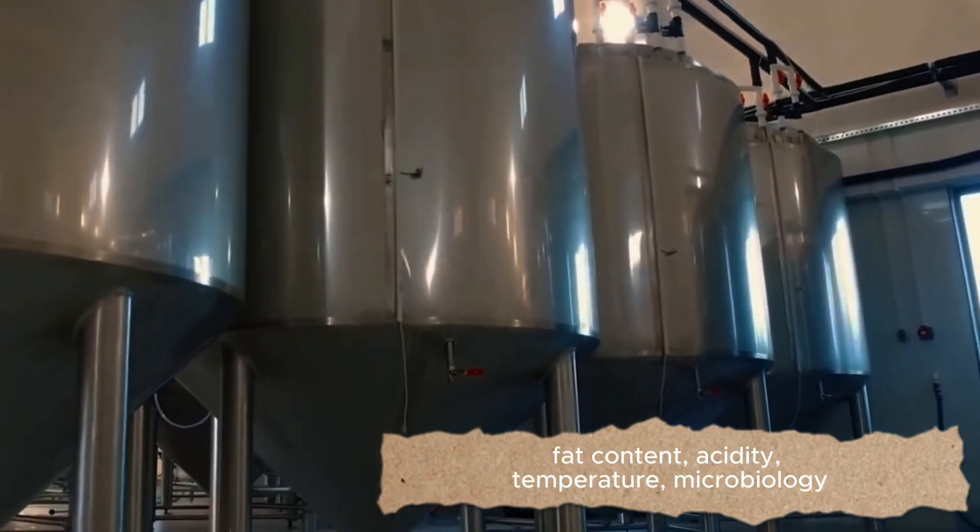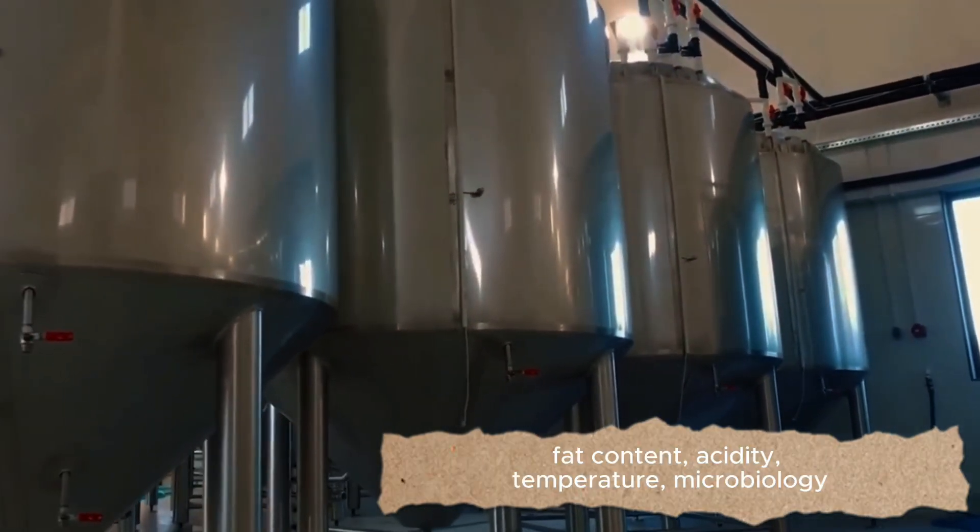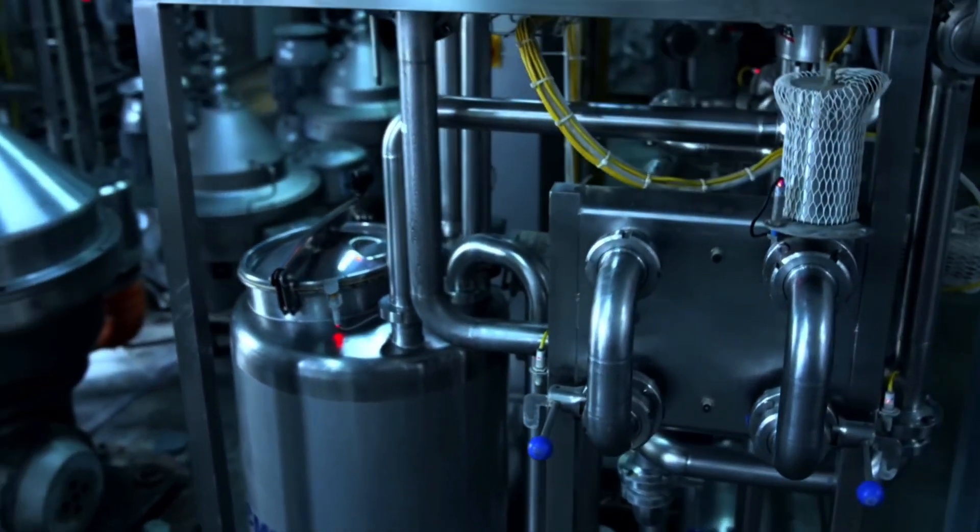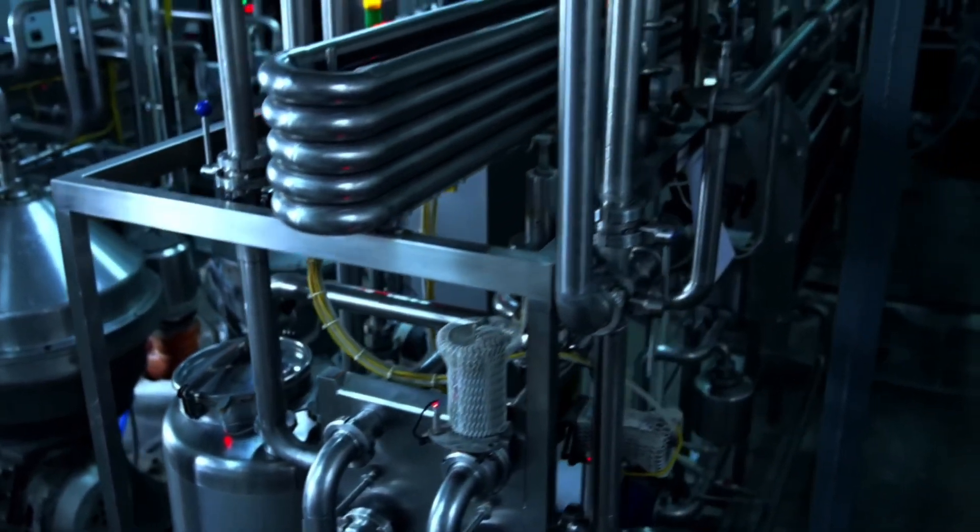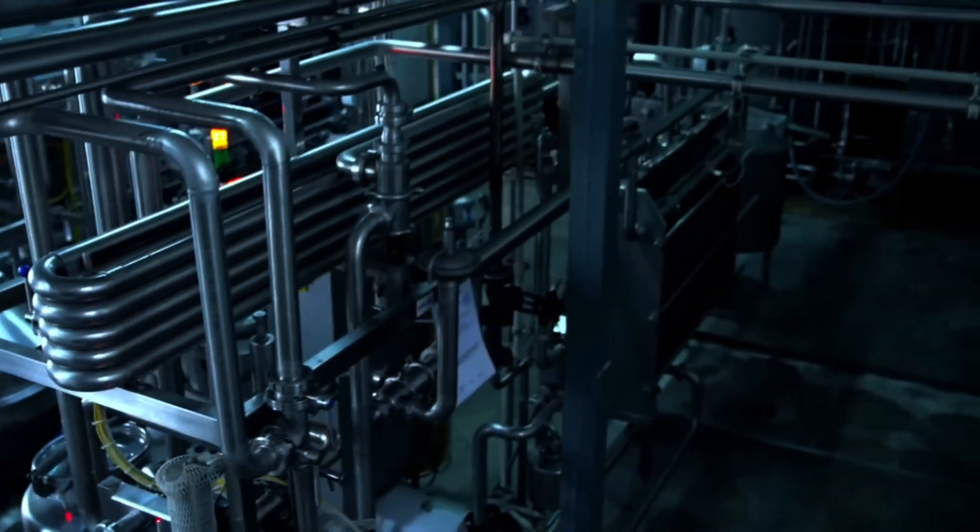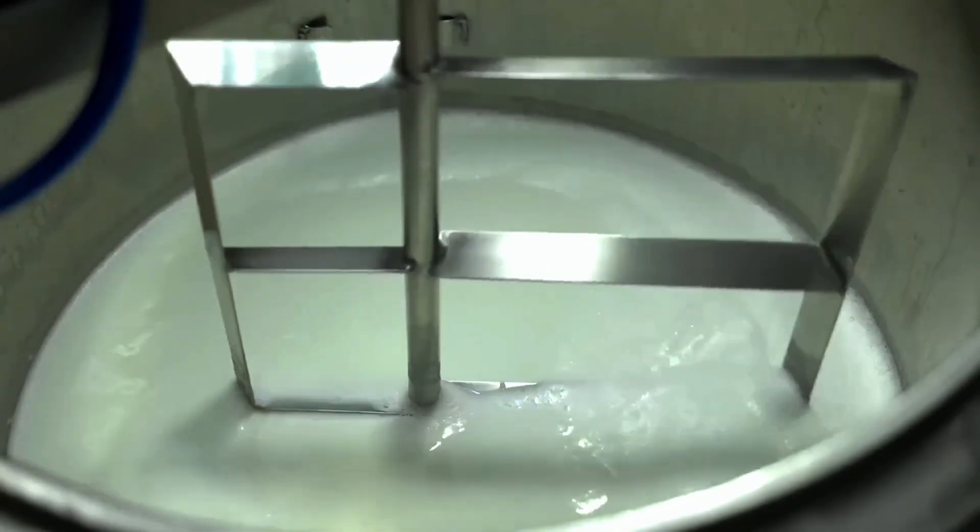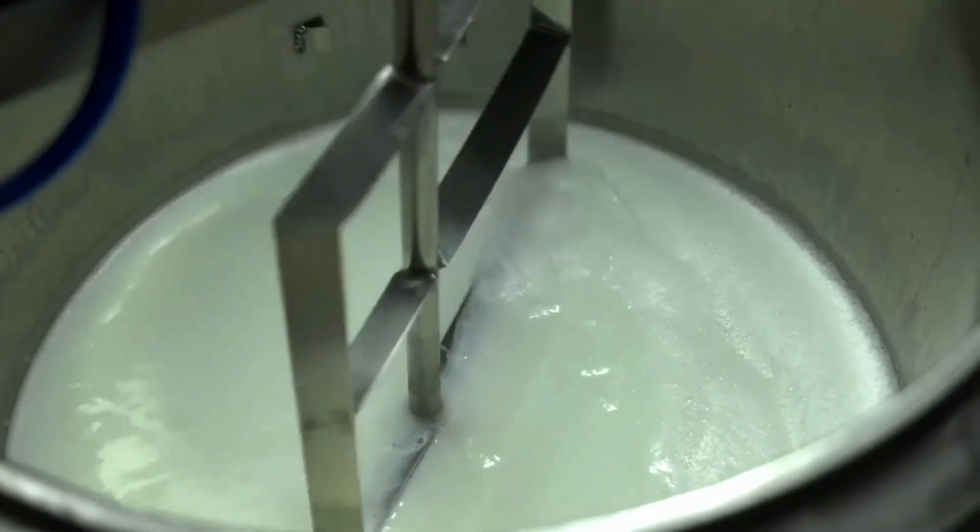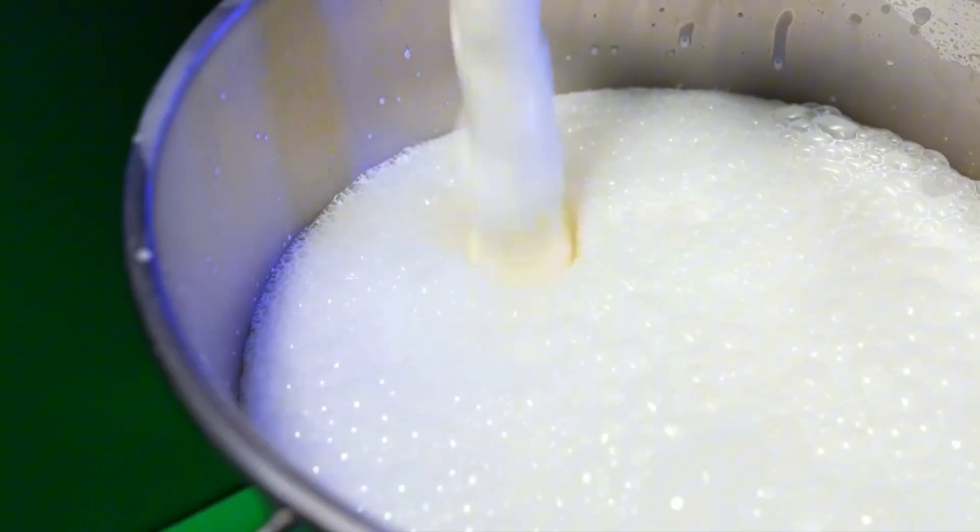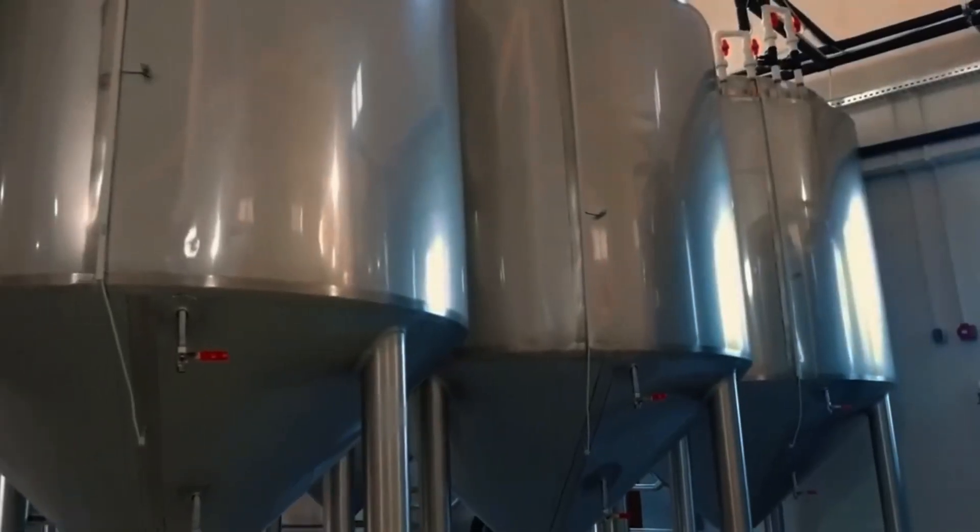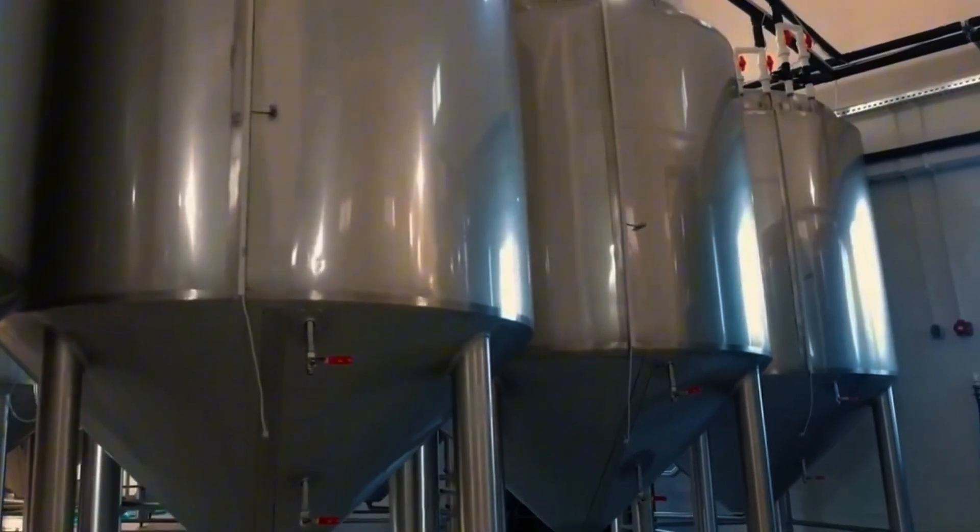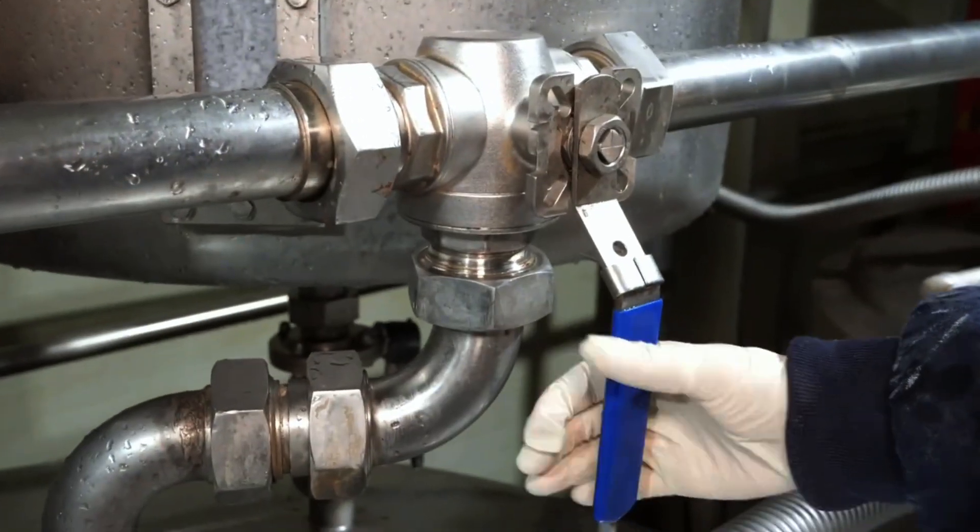Fat content, acidity, temperature, microbiology. If anything is off, the entire batch is rejected. Quality always comes first. The milk is then pumped into massive stainless steel tanks, where it awaits the next step. This is known as the raw material block. The heart of the factory, where all ingredients for future ice cream are assembled.